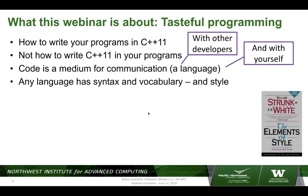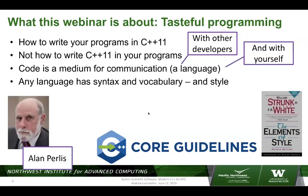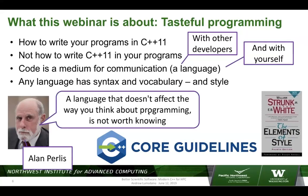Like any language, a programming language has a syntax, vocabulary, and style. In English we have guidelines like Strunk and White. In C++ there's also an evolving and wonderful online resource called the C++ Core Guidelines. One thing to keep in mind as we go through the elements of style of C++ is that it should really be affecting the way you think about programming. It's not just a new set of features on top of previous versions of C++. It's really a new language.